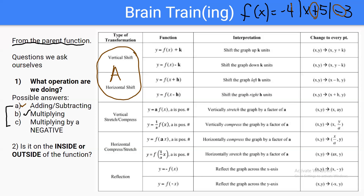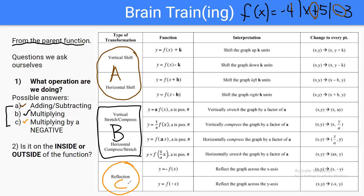If we're multiplying, we're stretching or compressing. And if we're multiplying by a negative, we are reflecting. So if you ask yourselves what operation we're doing, it's either a shift, a stretch or compress, or a reflection — based on what operation we're doing.